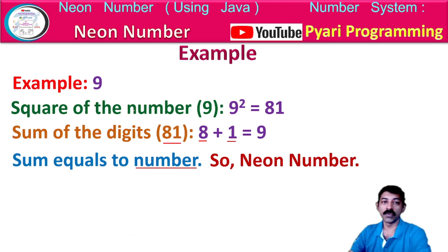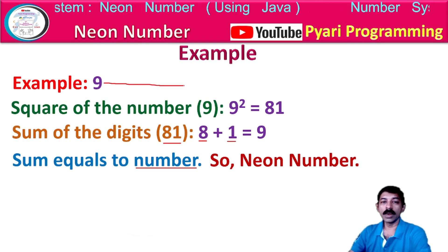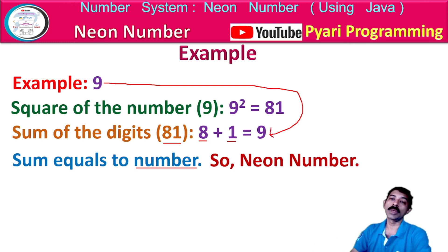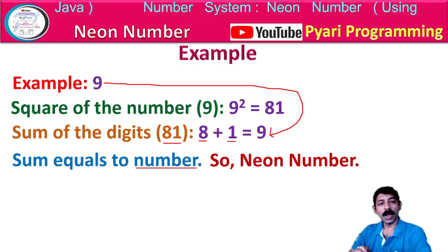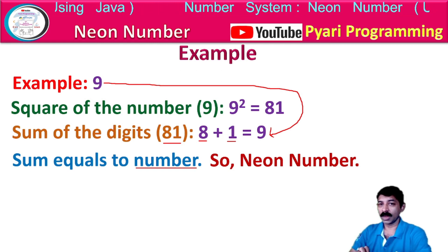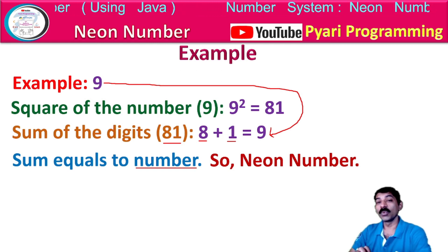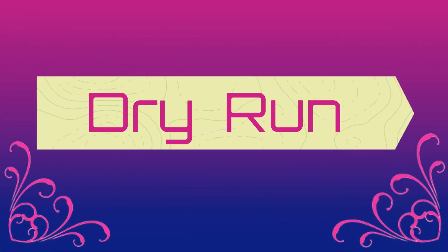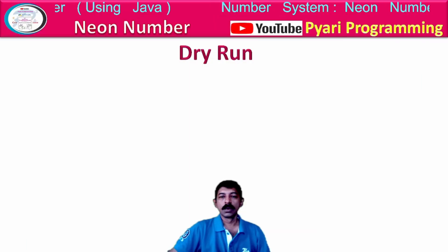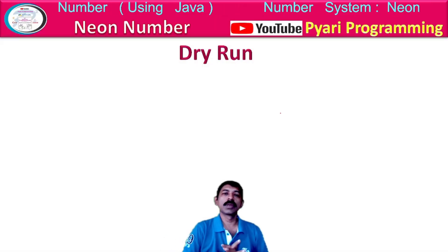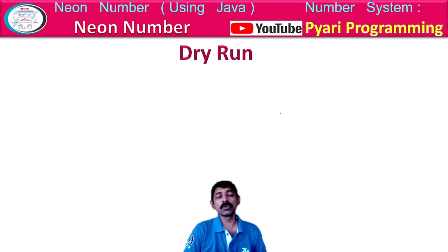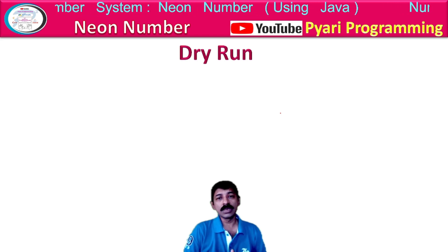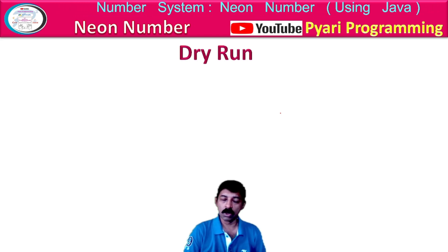So it is called a neon number if the original number is equal to the sum of the digits of the square of the number. Now let's start with our dry run. You might wonder why we do a dry run — this dry run will help you to develop your logic and find errors in your program.